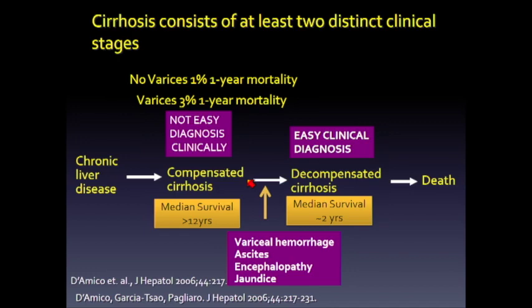However, compensated cirrhosis is not easily diagnosed because it doesn't have any of those complicating features. The mean survival of a compensated cirrhotic patient is greater than 12 years, while the median survival of someone with decompensated cirrhosis is about two years.